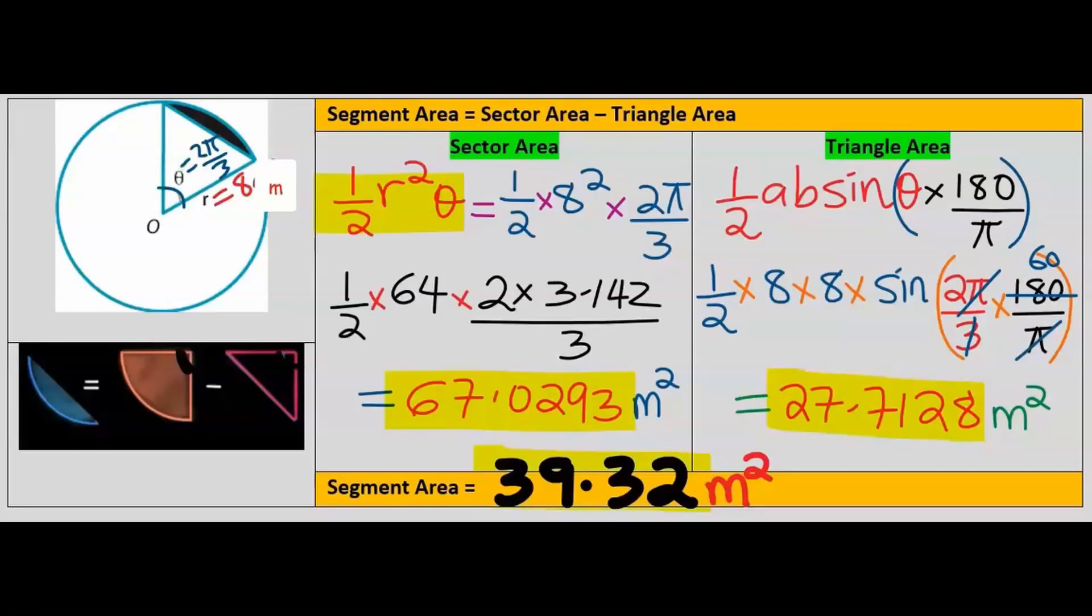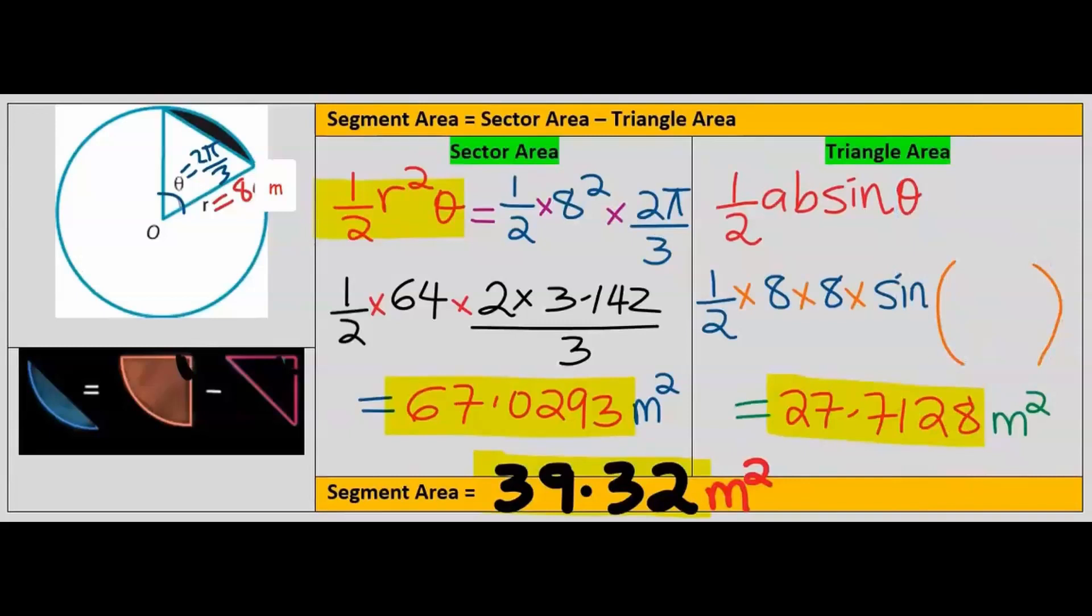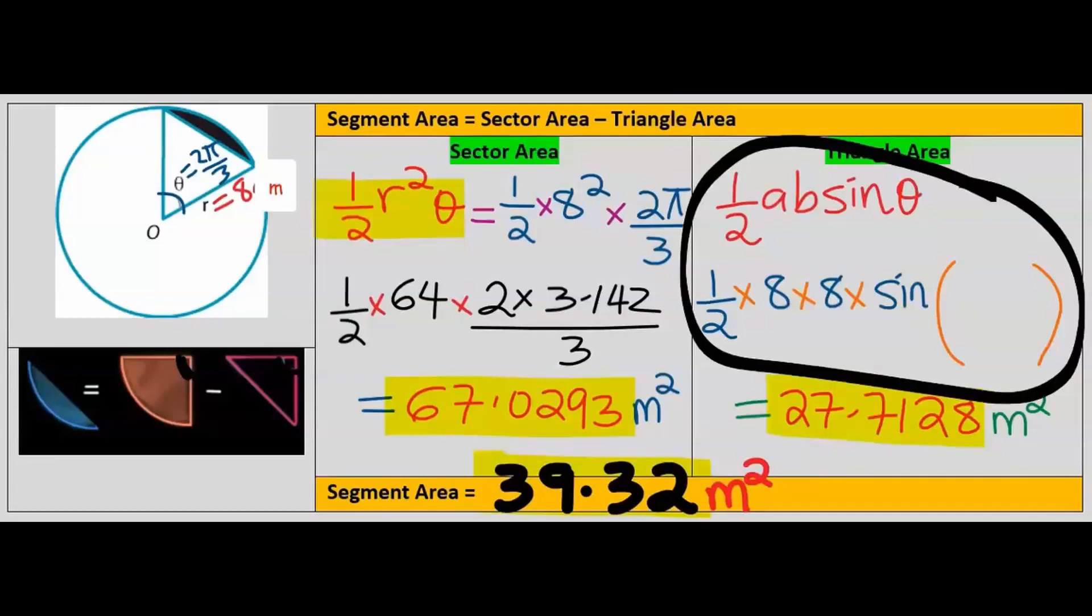Alternatively, in the calculation of the area of a triangle, we can maintain the angle in radians without conversion. However, π inside a trigonometric function is equal to 180 and not 3.142, which is π outside a trigonometric function.